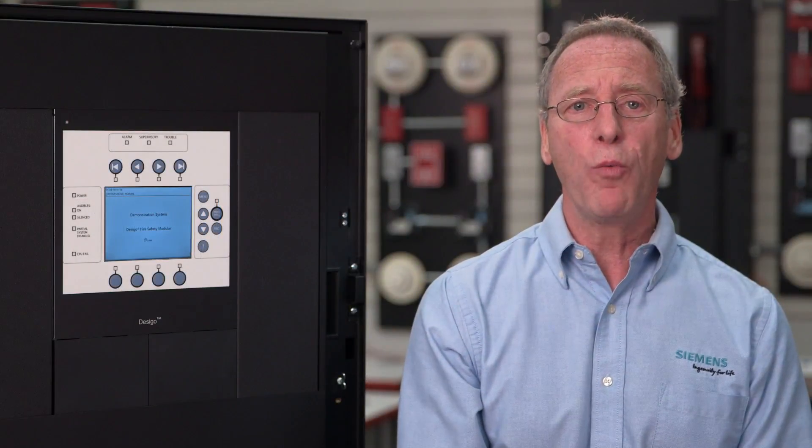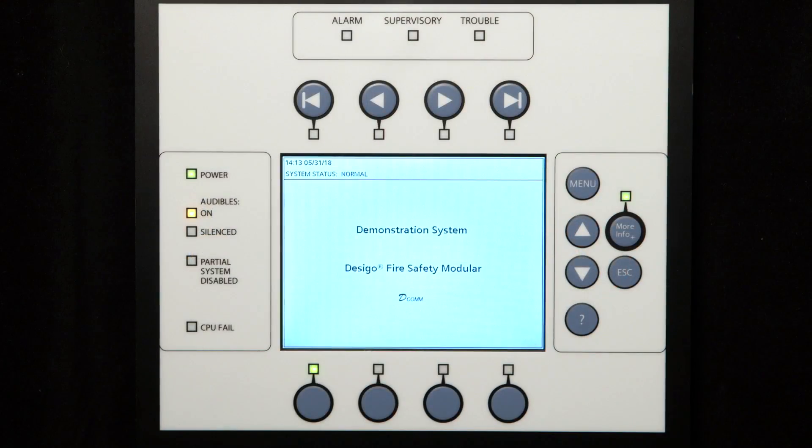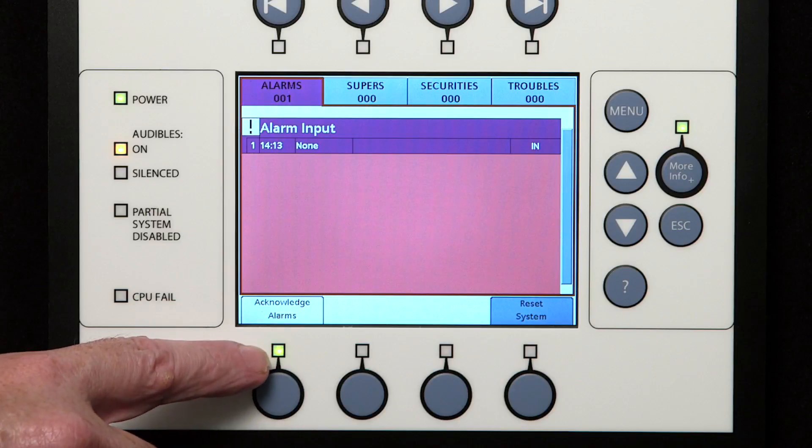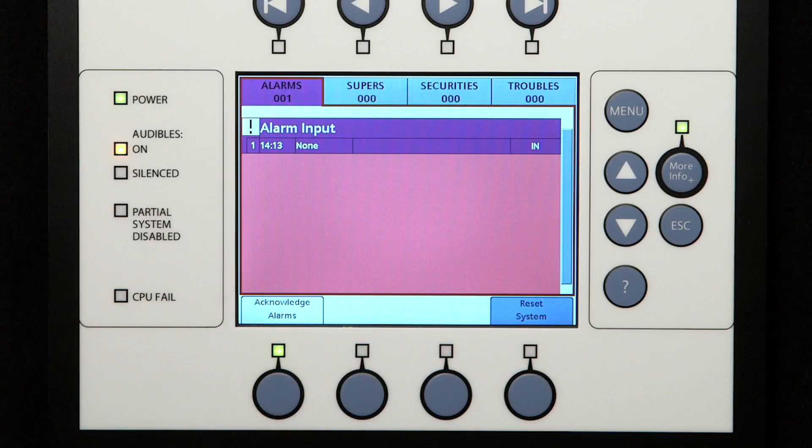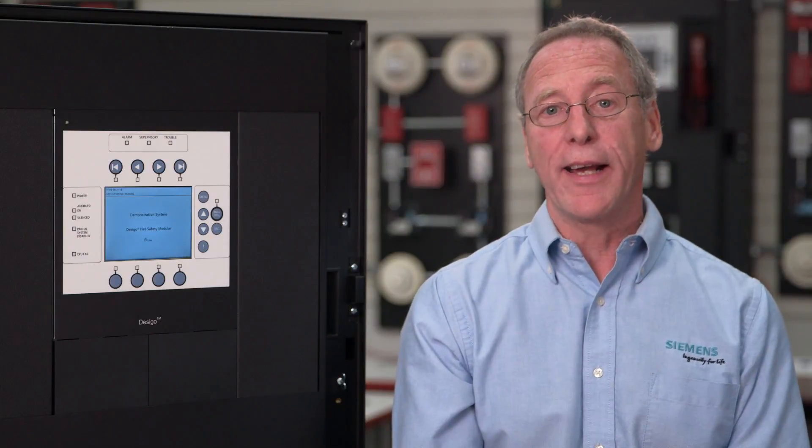Now we'll create an alarm event and walk through the steps to operate or control this event. Just above the lower left button, the display will show the selection becomes an acknowledge button. The LED associated with this button is lit, showing that the button is now active. Pressing this button will acknowledge this event.